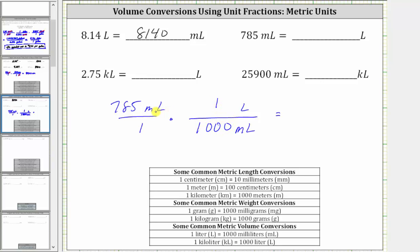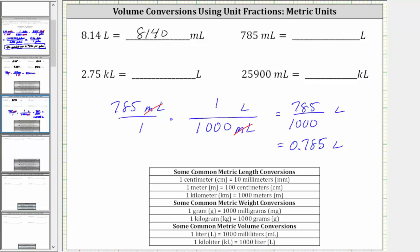Here we have milliliters divided by milliliters, and therefore milliliters simplify out, leaving us with liters. So now we multiply, but notice this time we have a fraction. When multiplying, we have 785 divided by 1,000, and the units are liters. So to finish, we have to find this quotient. 785 divided by 1,000 is equal to 0.785, and the units are liters. So 785 milliliters is equal to 0.785 liters.